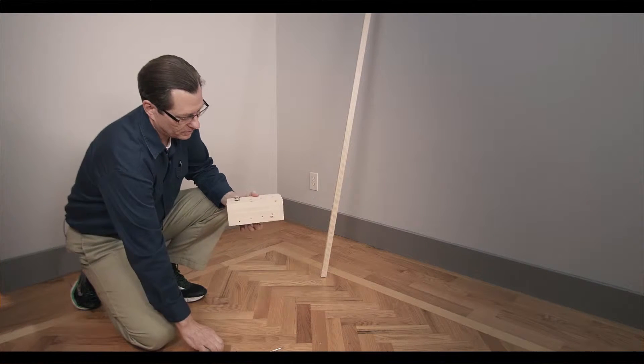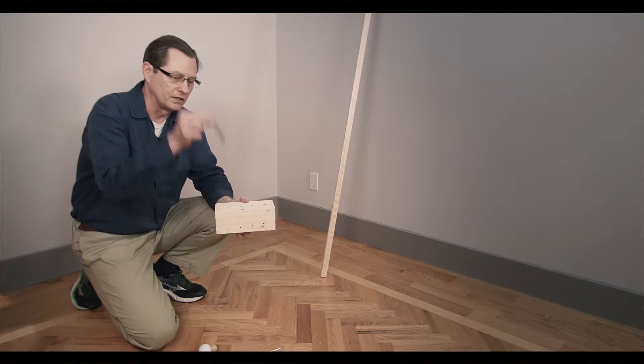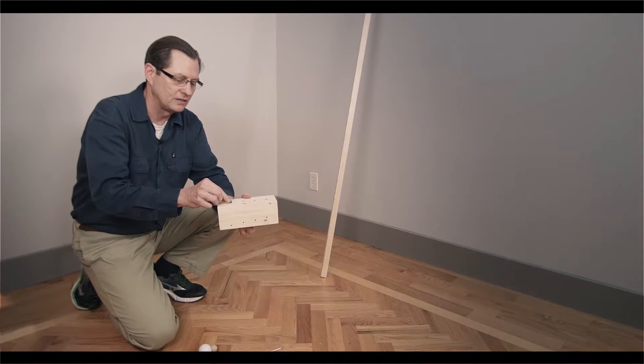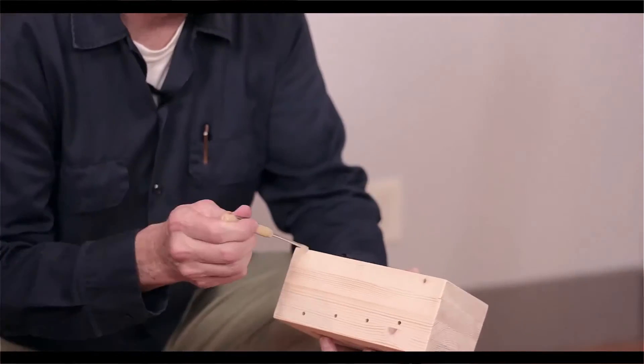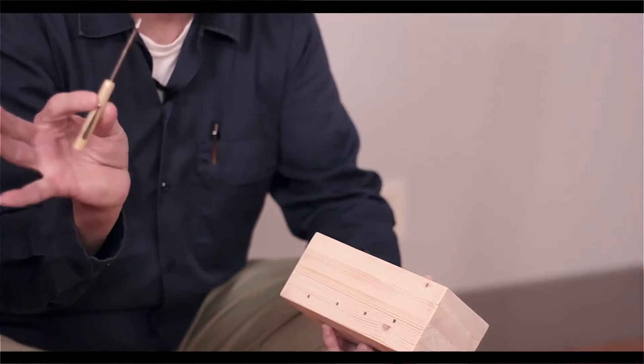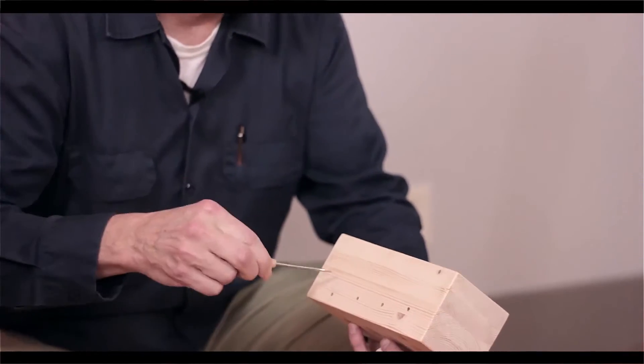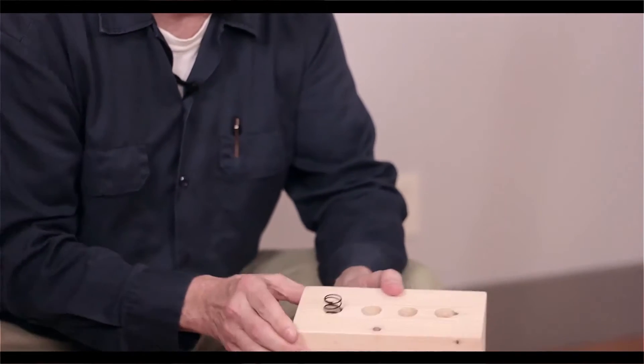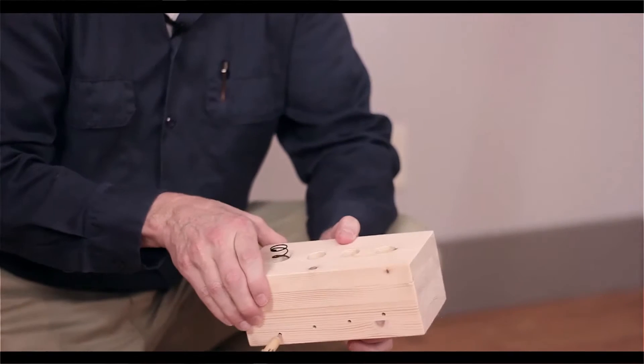Now, the spring tends to want to fly out of the block when we do this, if it's not attached into the block. So we have a sequence of little holes drilled in the block going into where the spring is, so that I can take a little screwdriver like this one or some other thin device and put it in to lock the spring in place. All right, I think we're ready.